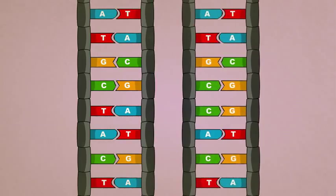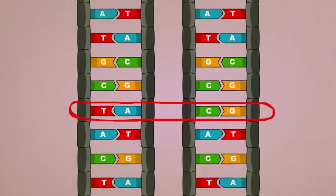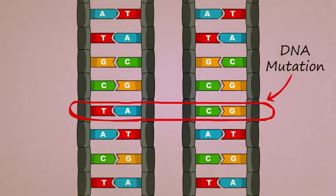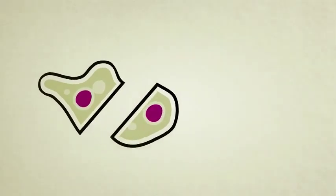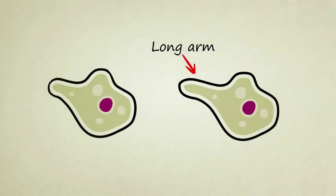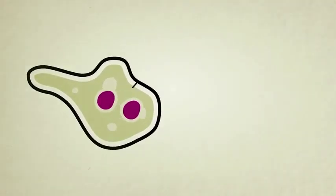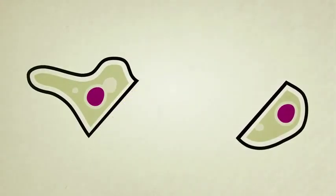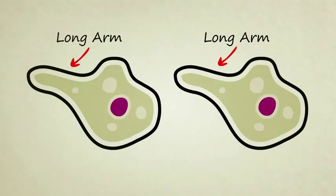When DNA is being copied, errors can occur which modify the DNA code. This is what we call a DNA mutation. These mutations, which happen completely on accident and randomly to any part of a DNA strand, can produce variation in the body shape and function of the creature who inherits the modified DNA. In this case, our new little friend has an arm that stretches extra long. If he survives long enough to grow and reproduce, that extra stretchy arm, which is now coded for in his DNA, will be passed on to his children.